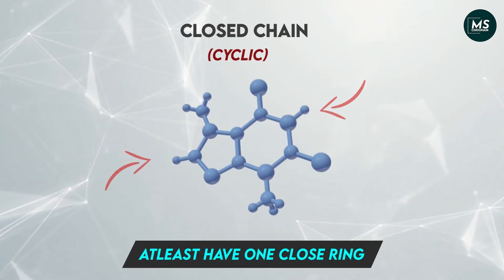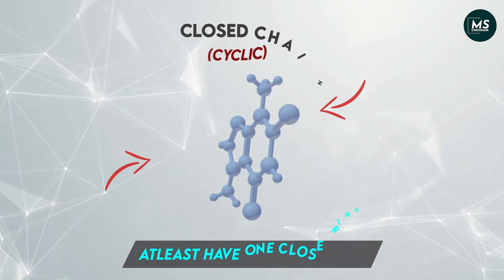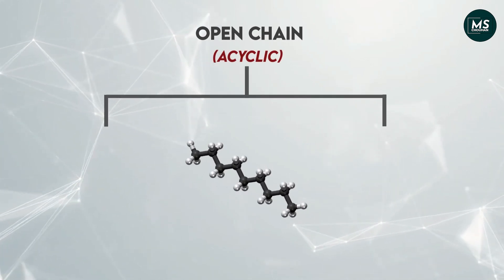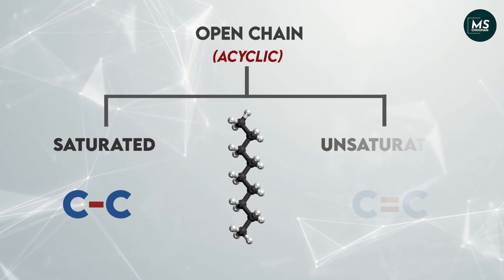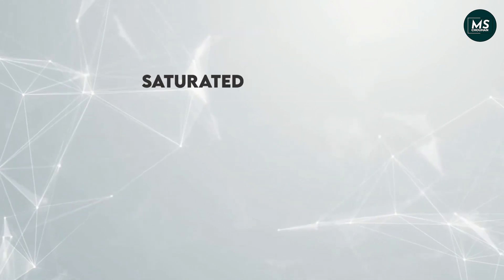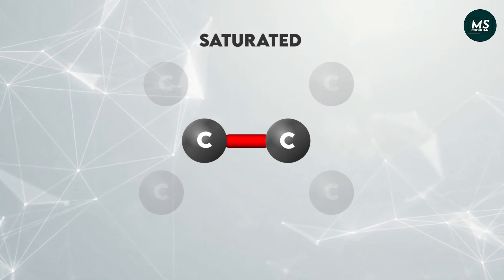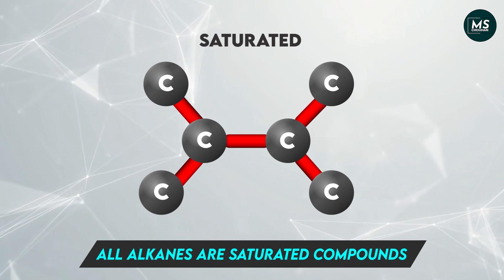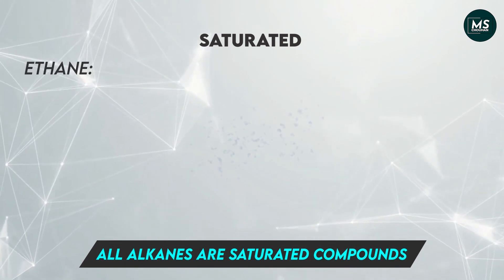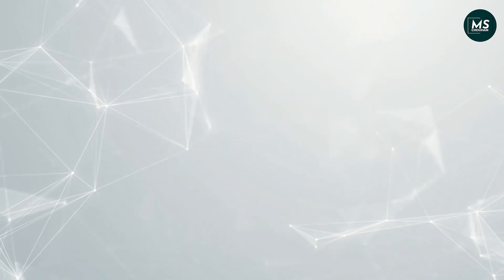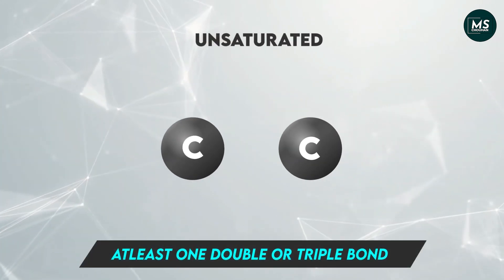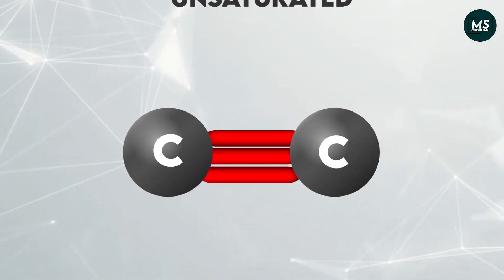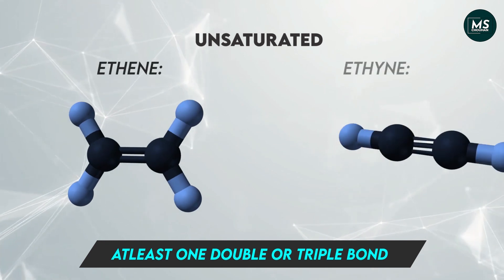Open chain compounds can be further classified into two categories: saturated compounds and unsaturated compounds. Saturated compounds are those where all the bonds between carbon atoms are single covalent bonds — all alkanes are saturated compounds, for example ethane. Unsaturated compounds are those where at least one bond between carbon atoms is either a double or a triple bond; for example, ethene is an alkene and ethyne is an alkyne.